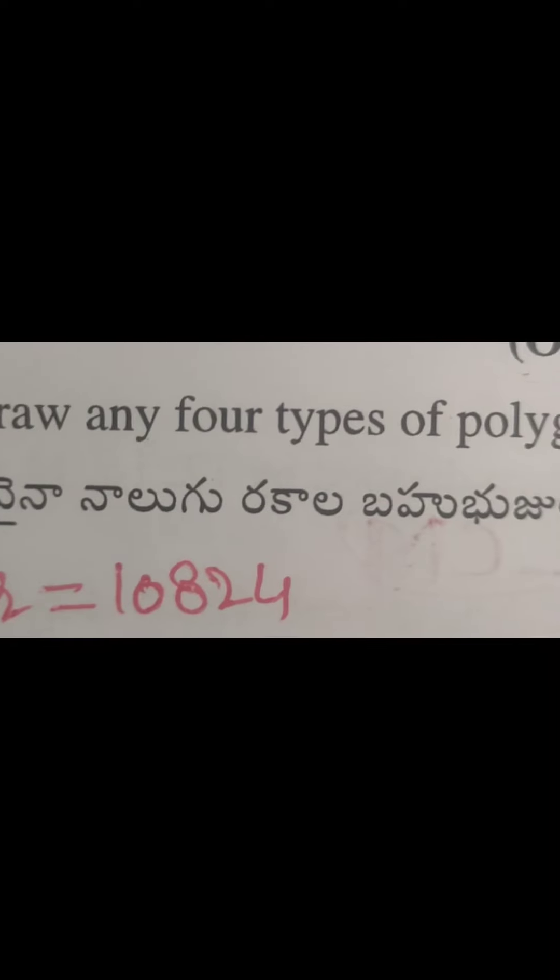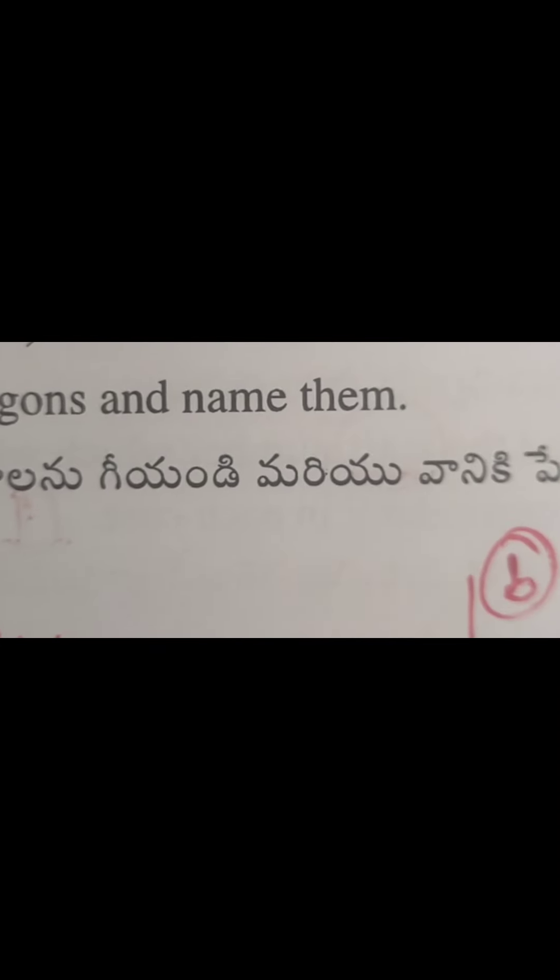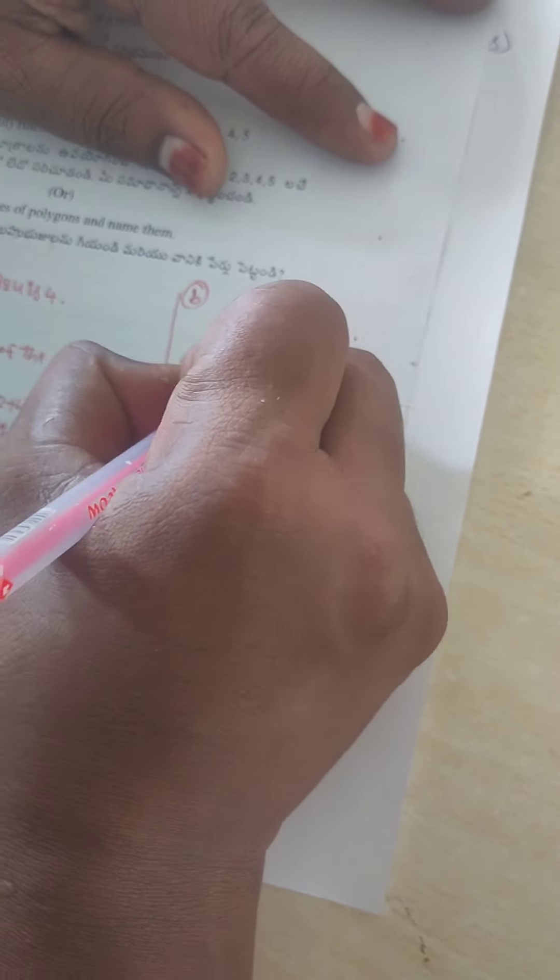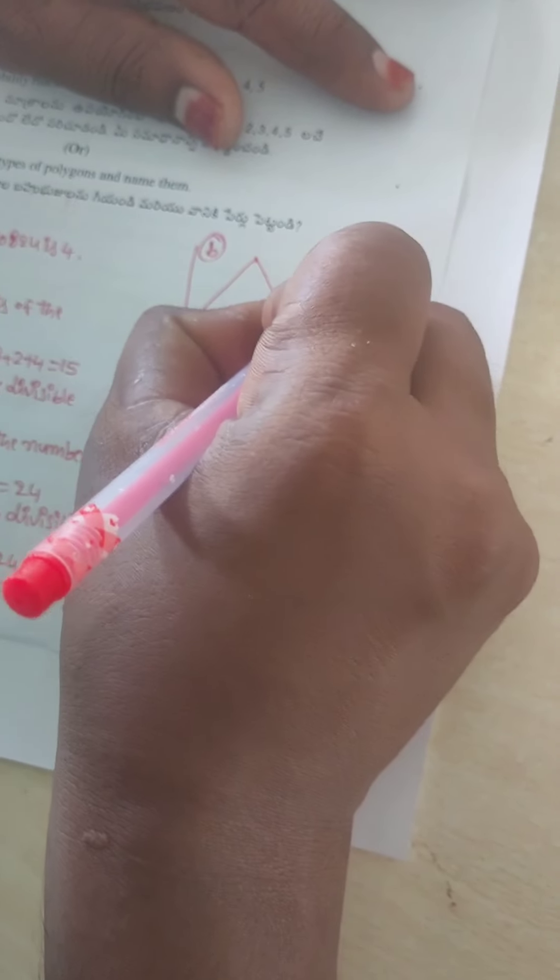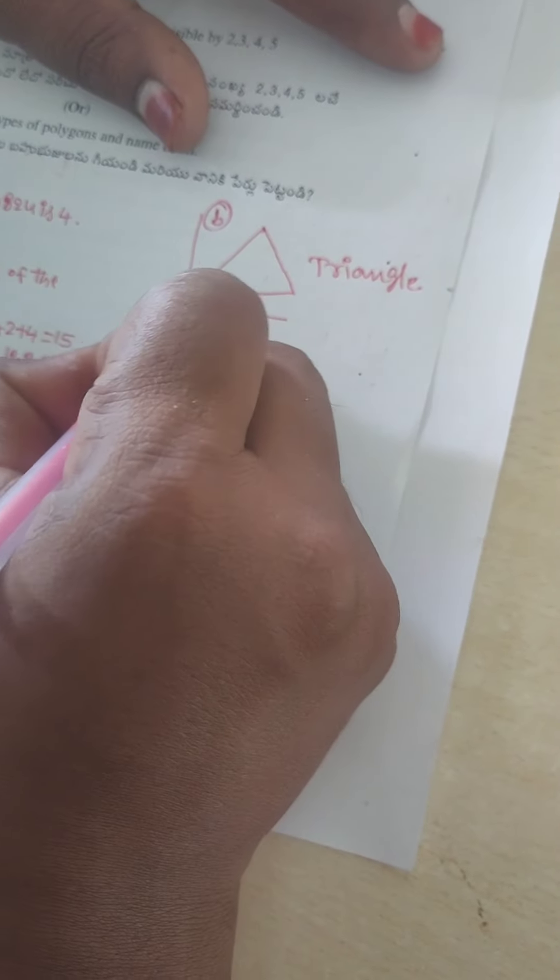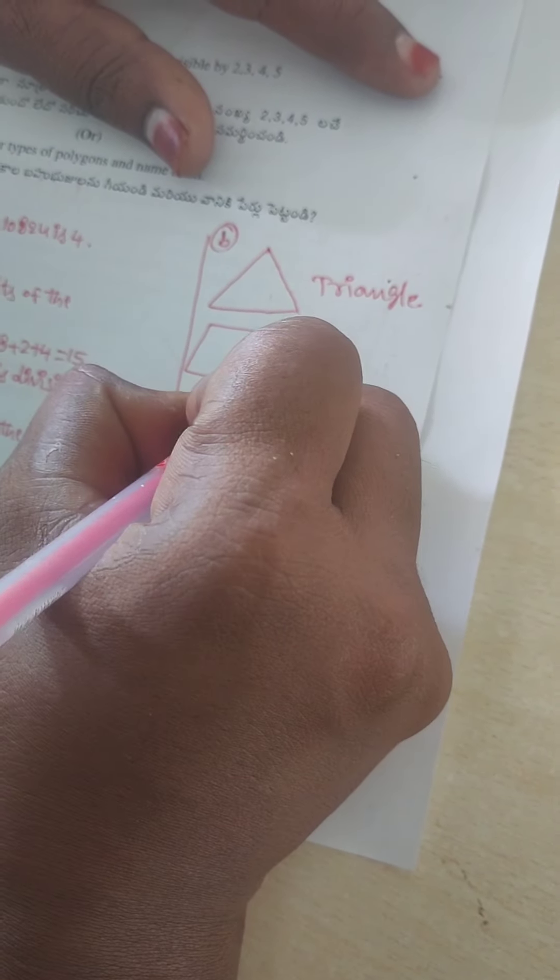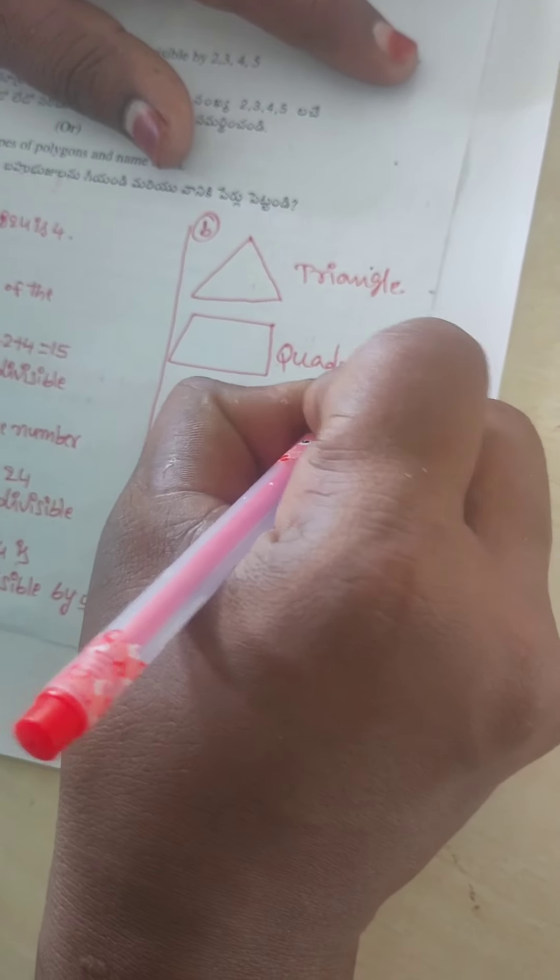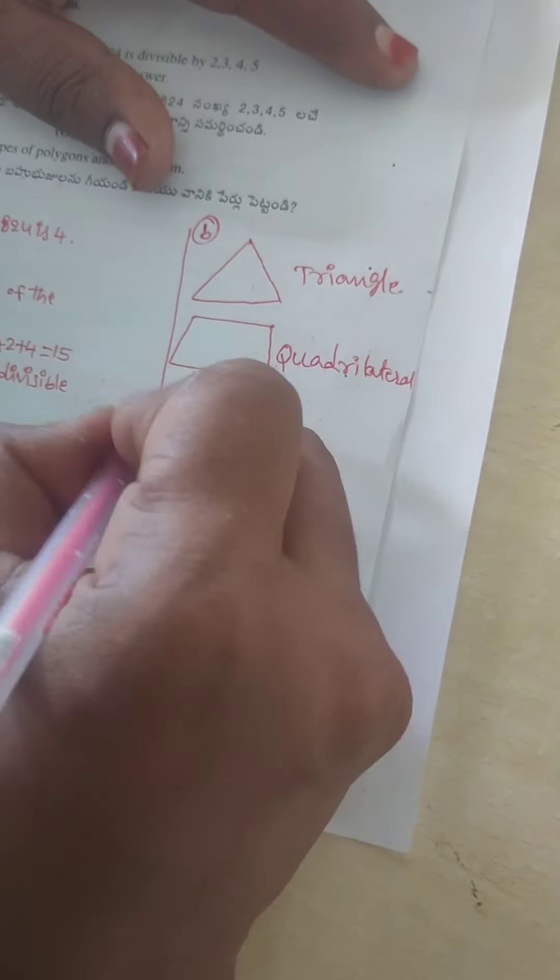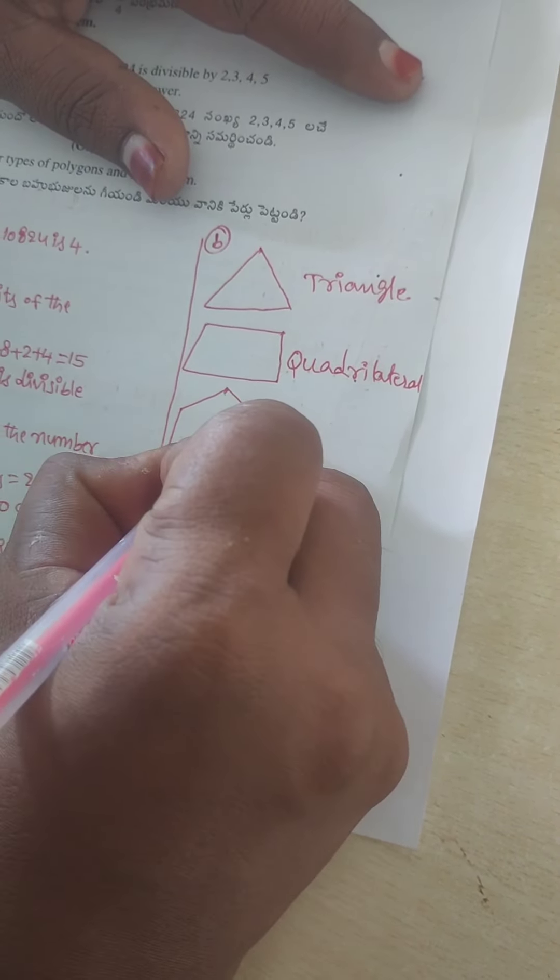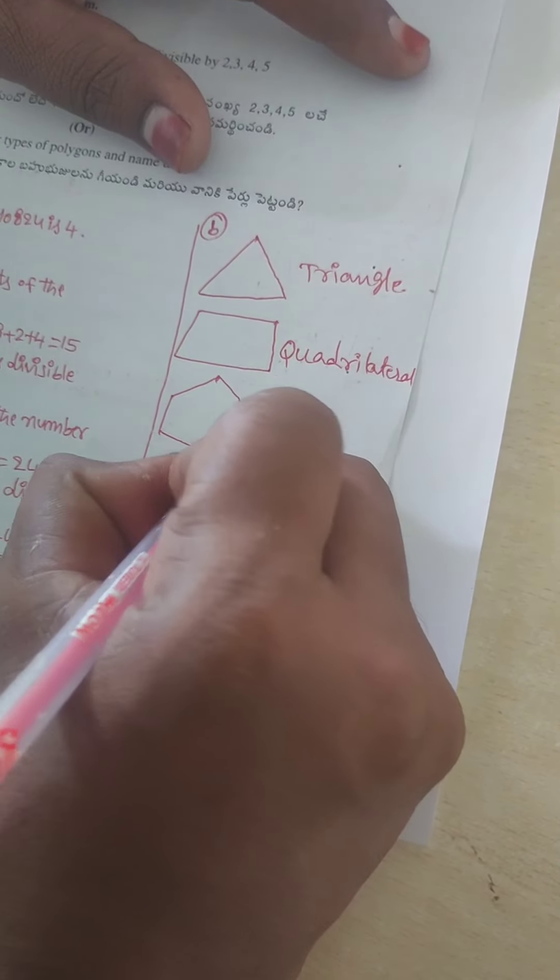The problem: draw any 4 types of polygons and name them. First, triangle. A triangle has 3 sides. Name: T-R-I-A-N-G-L-E, triangle. Next, 4 sided polygon, which name is quadrilateral. Next, 5 sided polygon: 1, 2, 3, 4, 5. 5 sided polygon, which name is pentagon.